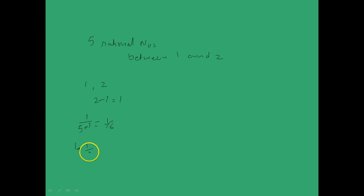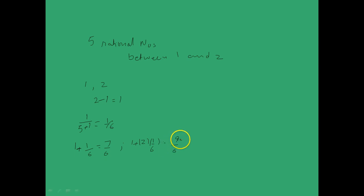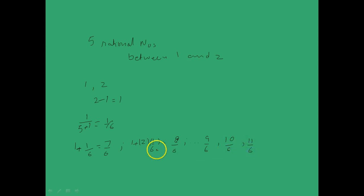Therefore your first rational number between 1 and 2 would be 1 plus 1 by 6, that is 7 by 6. The second one would be 1 plus 2 times 1 by 6, which is 8 by 6. And furthermore you get 9 by 6, then 10 by 6, and then 11 by 6. Therefore you have 5 rational numbers between 1 and 2.